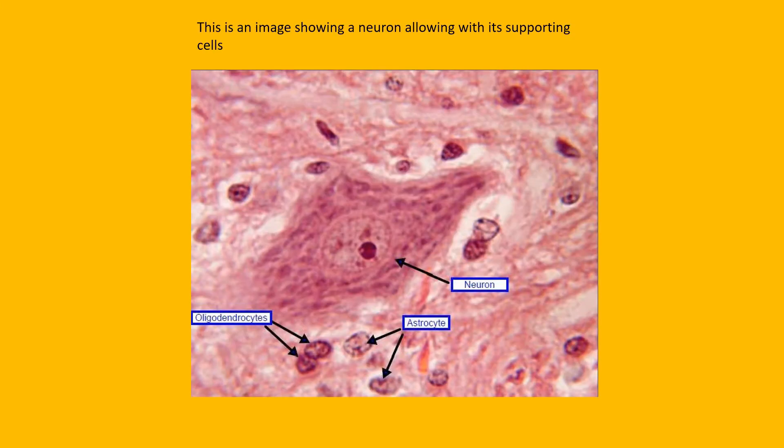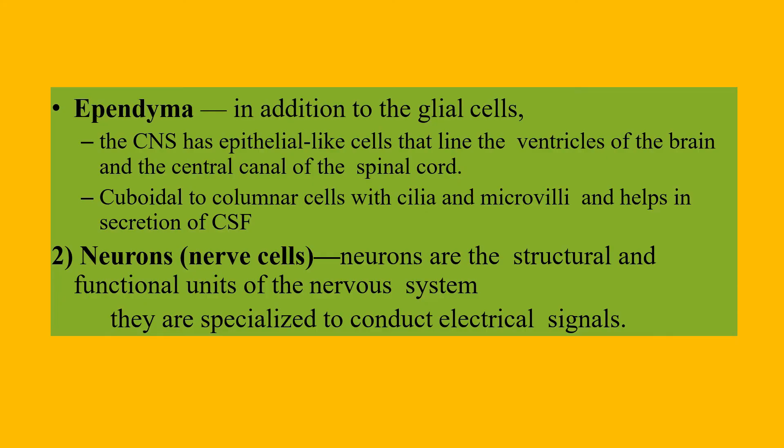This is an image showing a neuron along with its supporting cells. In addition to the glial cells, the CNS has epithelia-like cells called ependymal cells that line the ventricles of the brain and the central canal of the spinal cord. These are cuboidal to columnar cells with cilia and microvilli, and they help in the secretion of CSF.